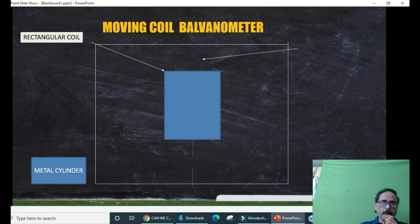This rectangular coil is suspended with the help of a phosphor bronze wire. Why we take phosphor bronze wire?